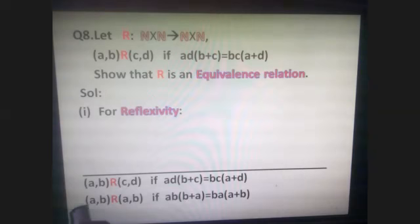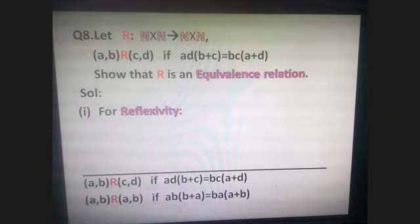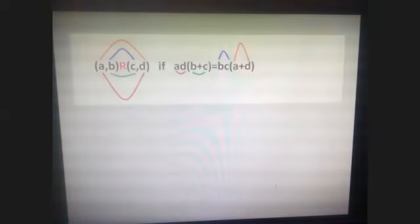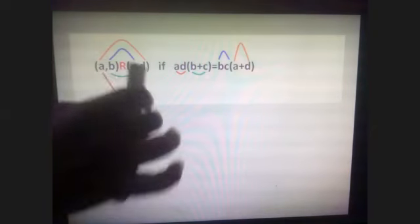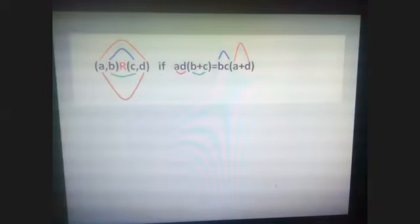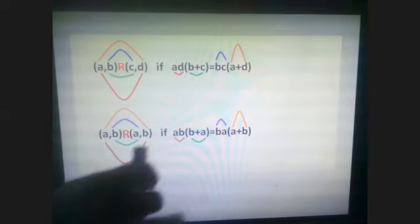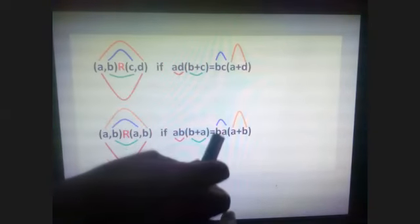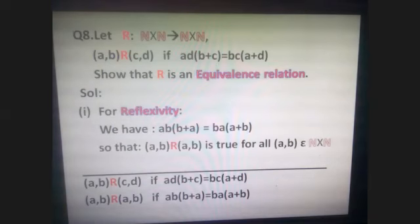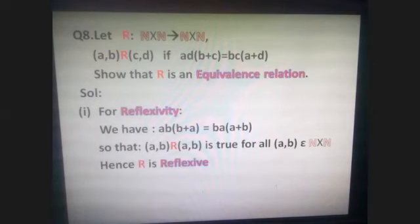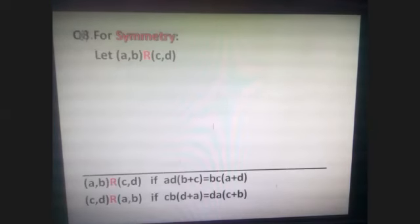For reflexivity, we have to show (a,b) is related to (a,b). That is possible if a·b·(b+a) equals b·a·(a+b). Now a·b·(b+a) is b·(a+b), and b·a·(a+b) is also b·(a+b) — both are the same. So a·b into (b+a) equals b·a into (a+b), which is true. Therefore (a,b) is related to (a,b) for all a,b, and the relation is reflexive.